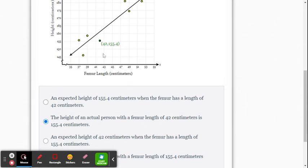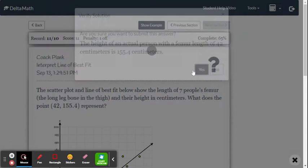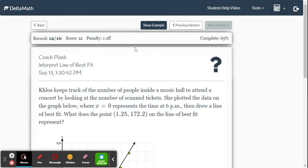If we were to think what's expected at 42, we'd look at the line of best fit. We'd actually expect the height, the model would expect the height to be around 161 centimeters for 42. So this is actual. All right. Let's look at another one.